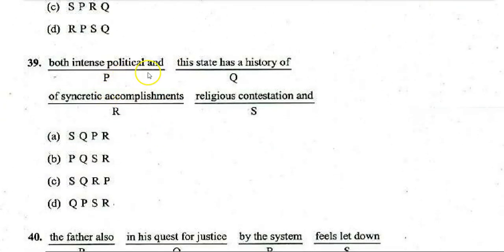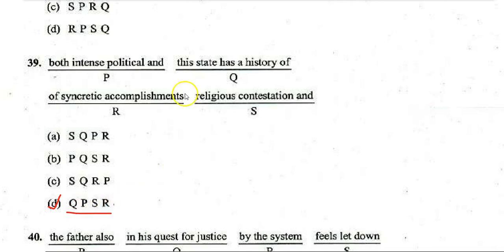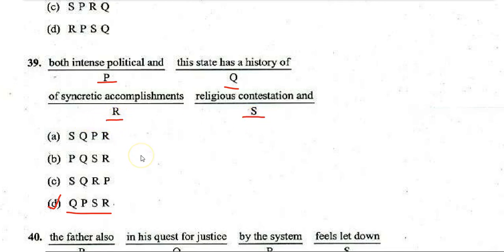Next word-ordering question parts: 'both intense political and,' 'this state has a history of,' 'of syncretic accomplishments,' 'religious contestation,' 'and.' The correct sequence is Q, P, S, R — forming: 'This state has a history of both intense political and religious contestation and of syncretic accomplishments.'